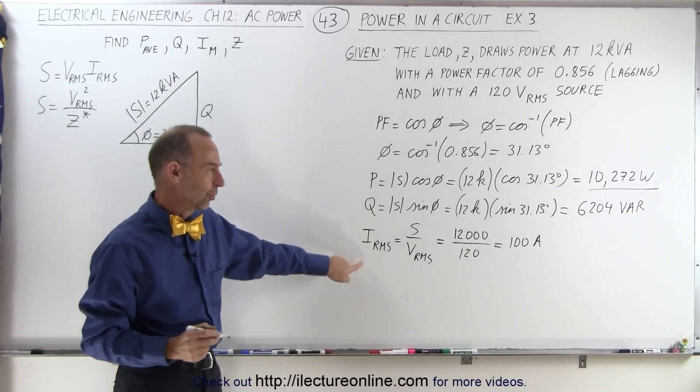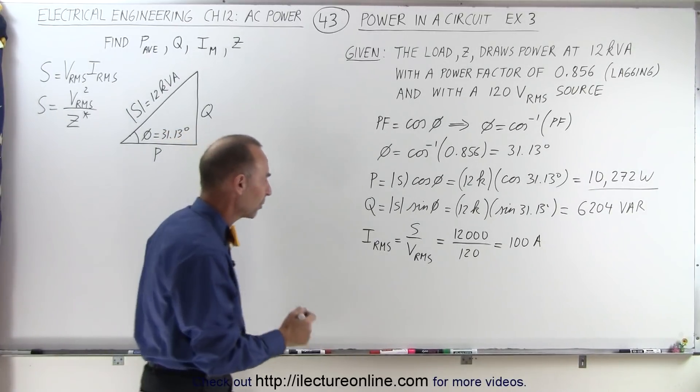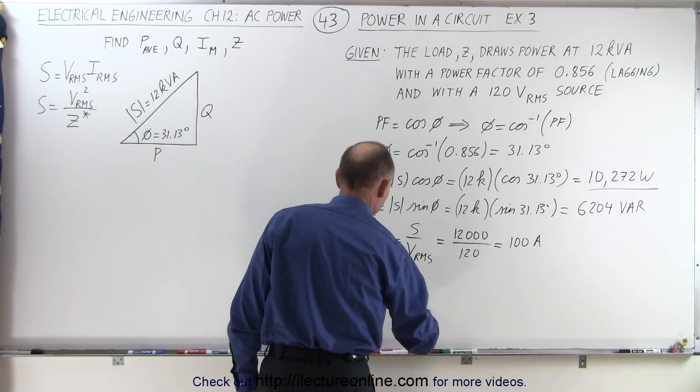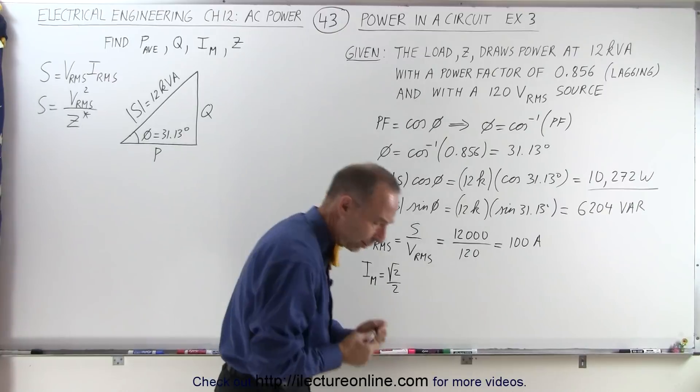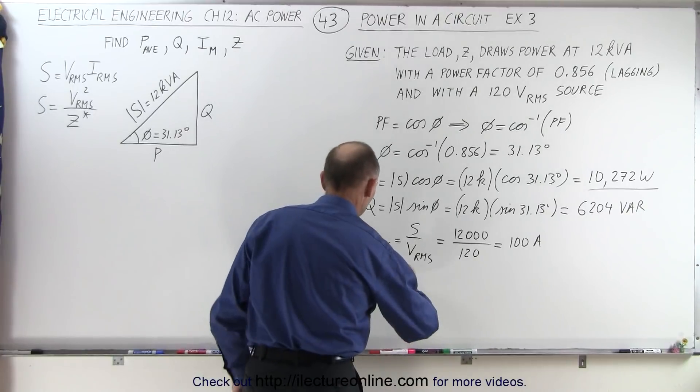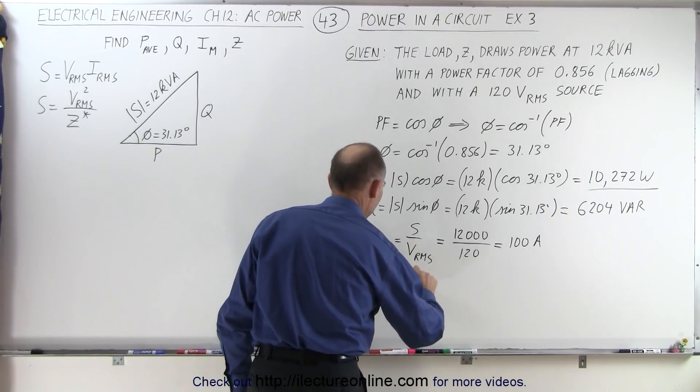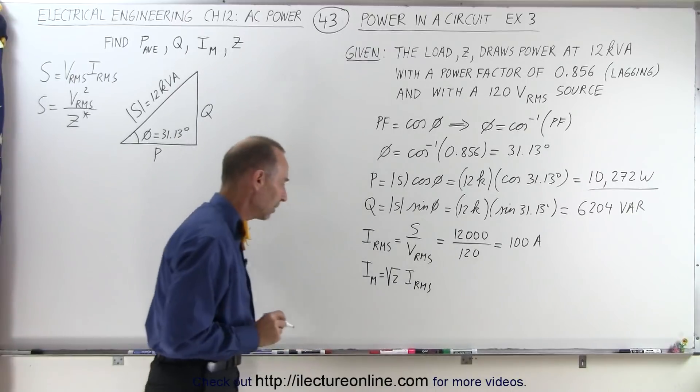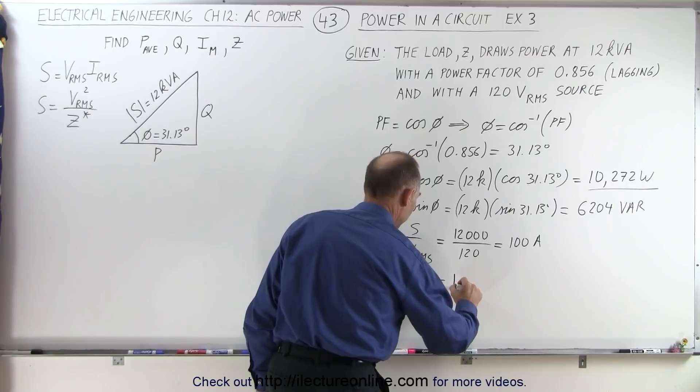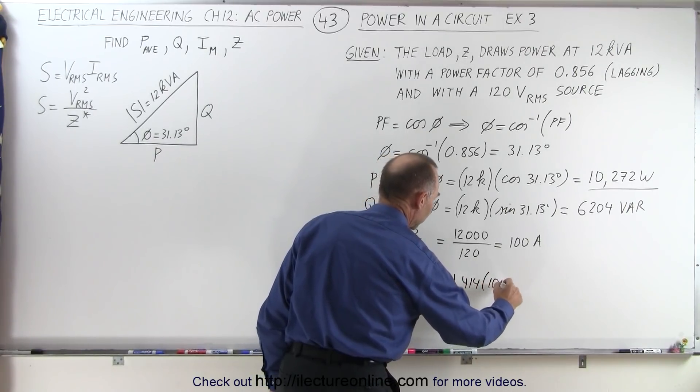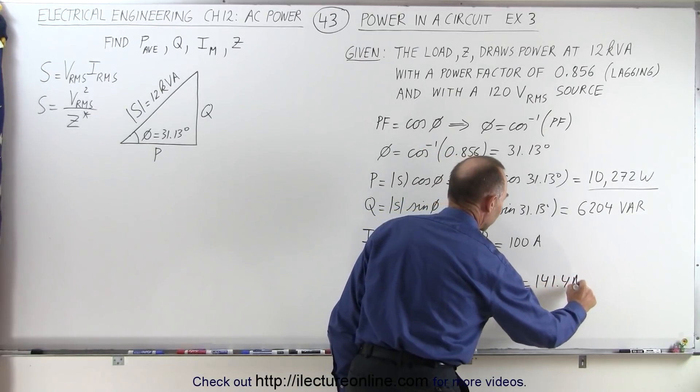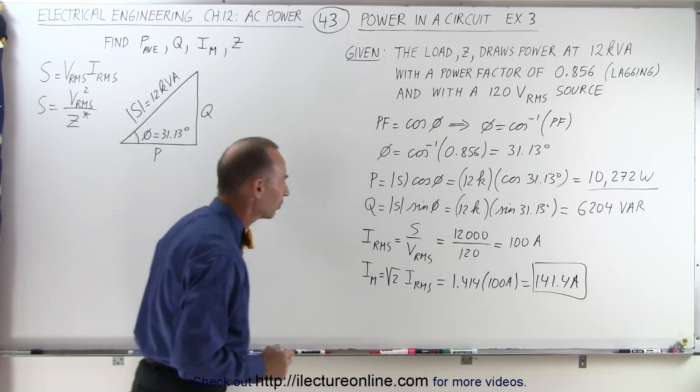But that's the RMS current. We want the maximum current. So Imax is equal to the square root of 2 times IRMS, because Imax is bigger than IRMS. So therefore, that would be equal to 1.414 multiplied times 100 amps, which equals 141.4 amps. So now we have the maximum current as well.